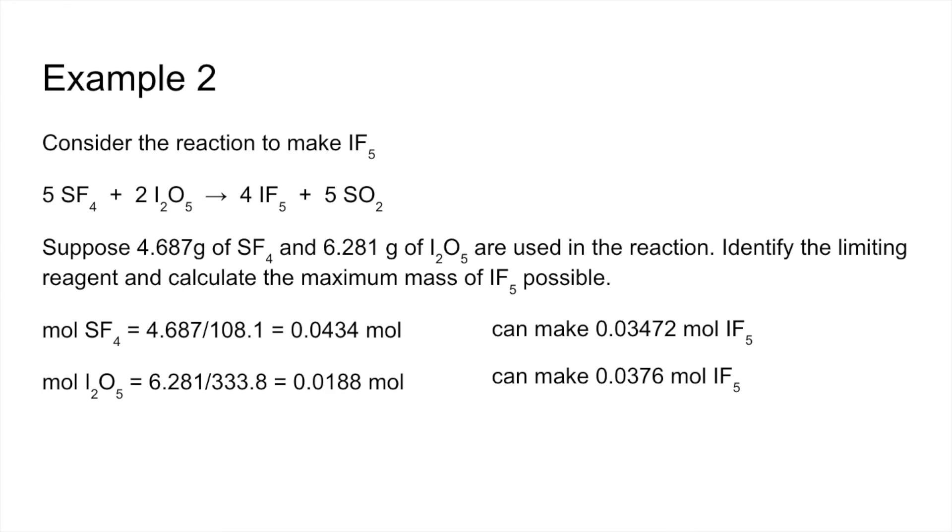So you can now see that the SF4 is making the fewest moles of IF5. So that's the limiting reagent. So now we know that's how many moles of IF5 we can make from the reaction. We multiply by its MR and we get 7.70 grams.